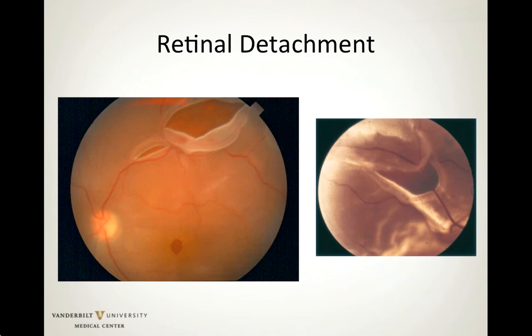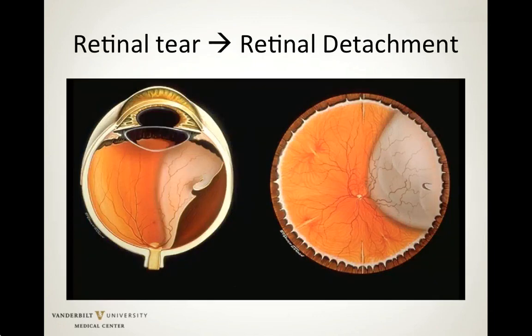Patients can have a range of symptoms that correlate with the area that is detached — central blurring, partial vision loss, or total vision loss. A retinal detachment develops as fluid seeps through the retinal tear and gets trapped behind the retina. On exam, the examiner will see a fluid collection behind the retina that lifts it up, which constitutes the retinal detachment.